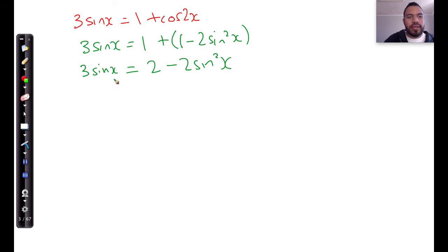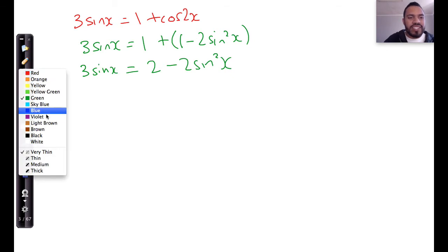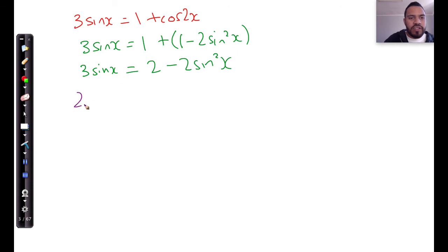So what I'm going to do over here is I'll try and take everything to one side, bring that over. I've got 2 sin squared x plus 3 sin x minus 2 is equal to 0.